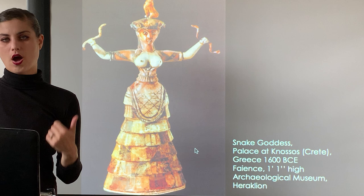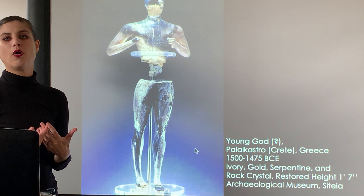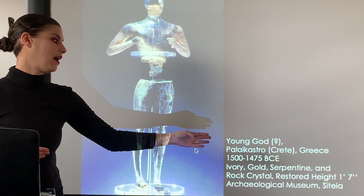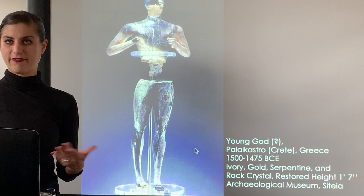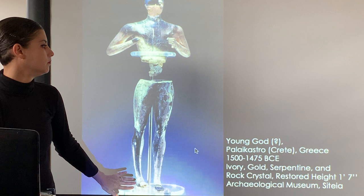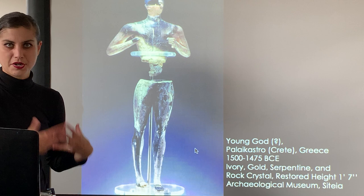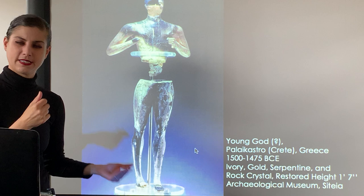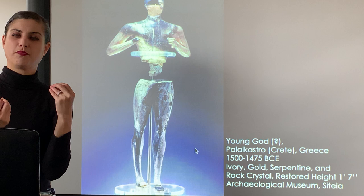The young god (question mark) is probably divine because of the materials he's made from: ivory, gold, serpentine, and rock crystals. Ivory and gold together is called chryselephantine - chrysos is gold, elephant for ivory. These incredibly precious materials suggest a cult statue, probably a god, maybe Apollo, though we can't say for certain.